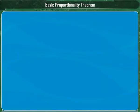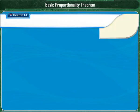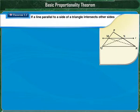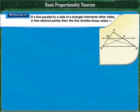After the recapitulation, we will first see the statement of the basic proportionality theorem. The theorem states: if a line parallel to a side of a triangle intersects the other sides in two distinct points, then the line divides those sides in proportion.